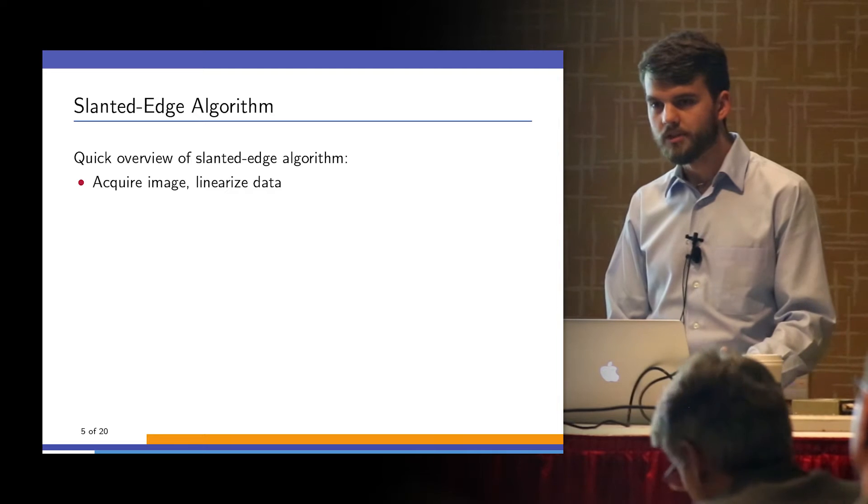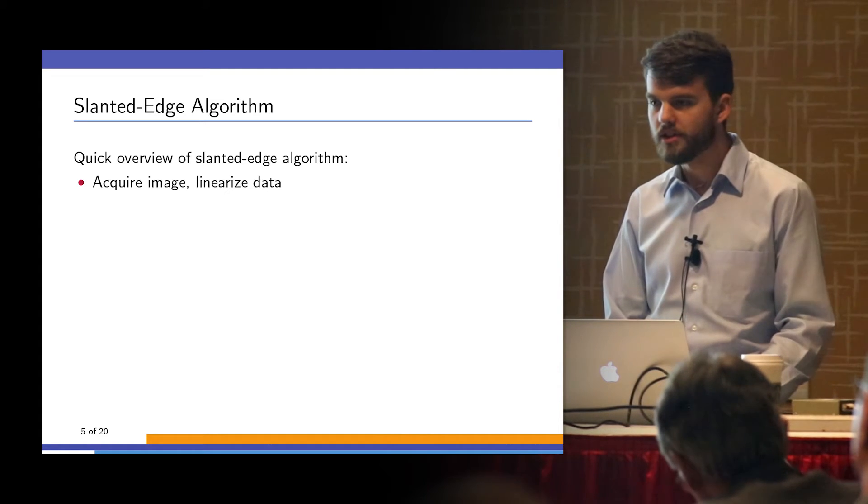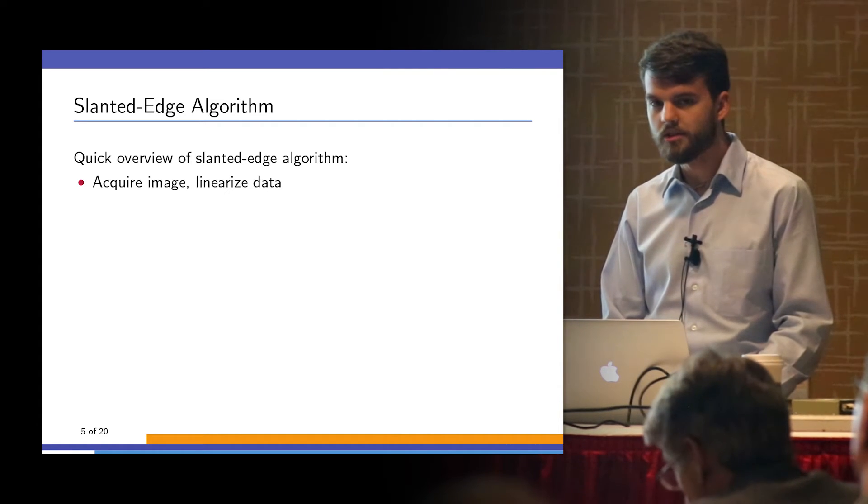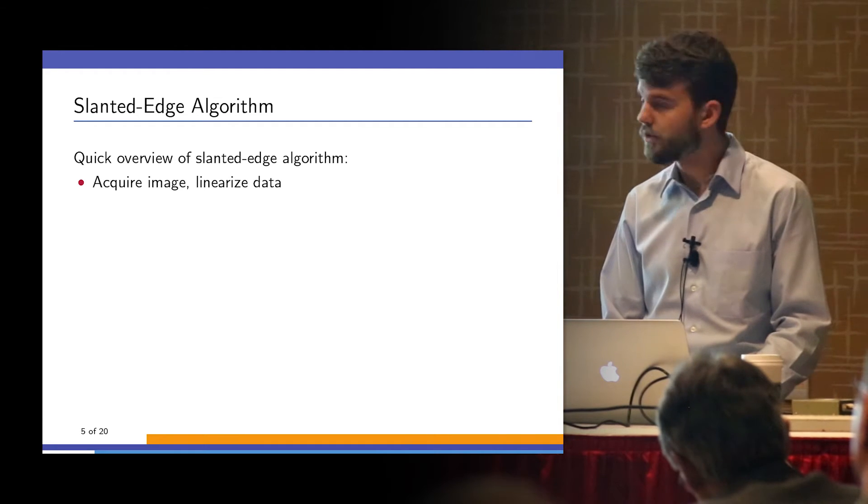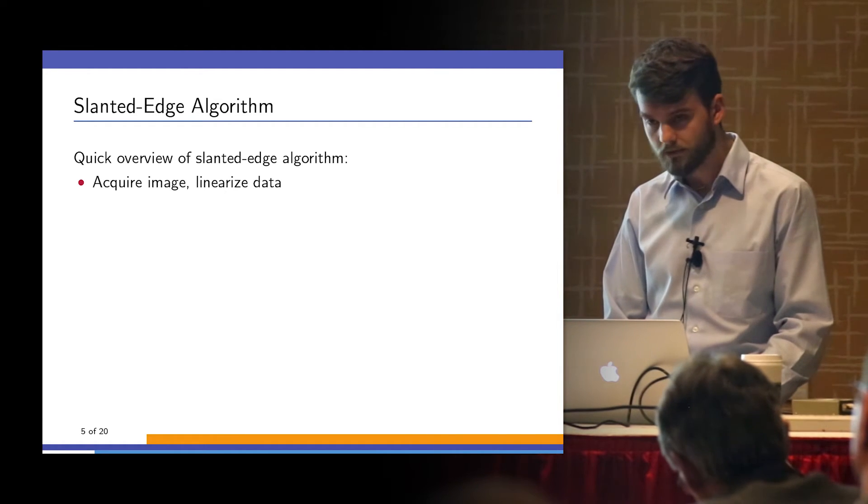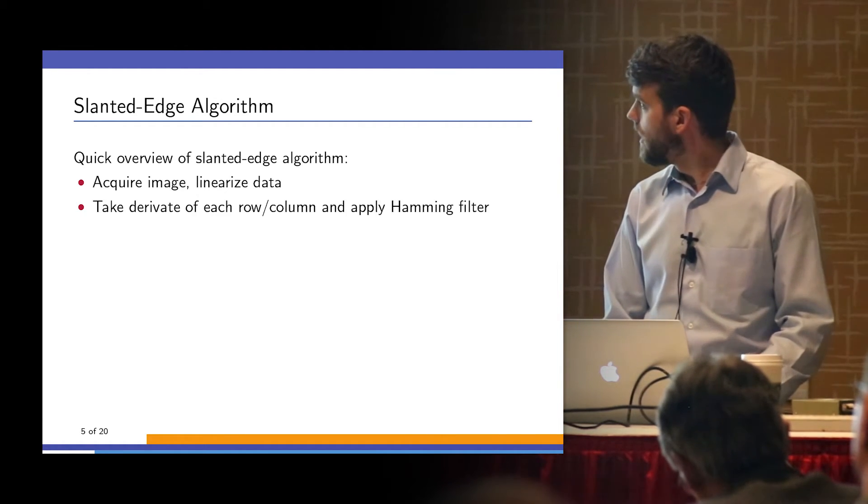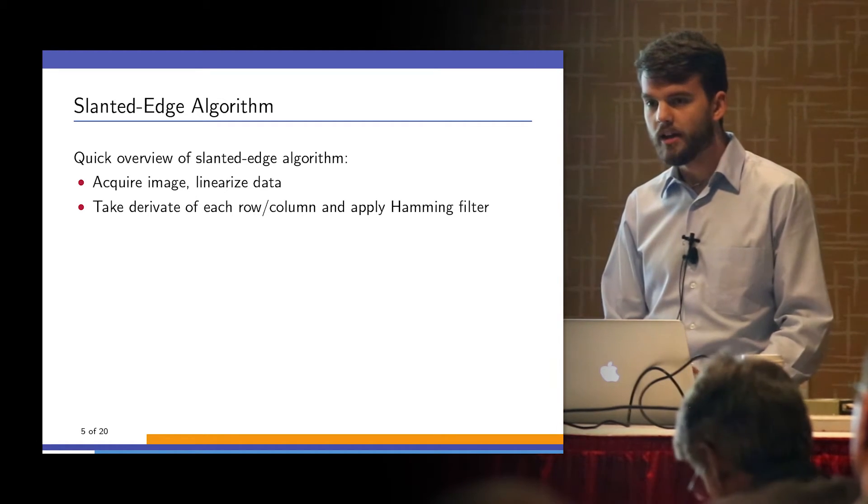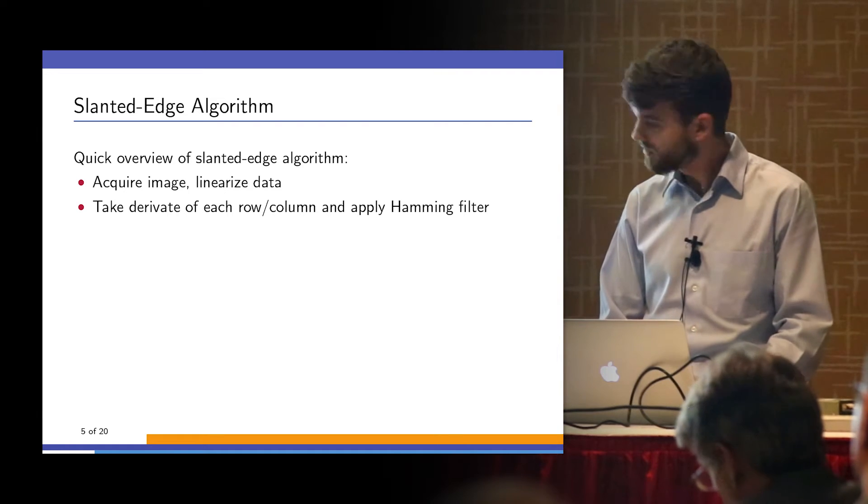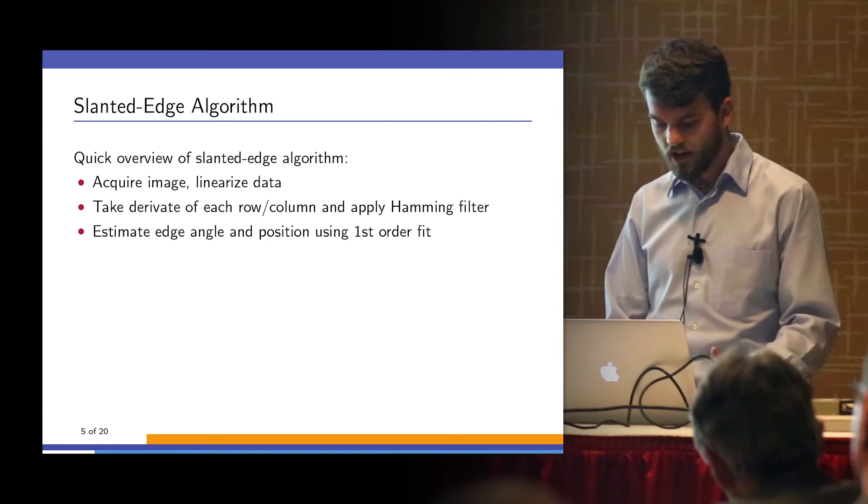First step, acquire an image of a slanted-edge. Make sure that the data is linear, either linearizing it using an OECF target or by using raw data. Take a derivative of each row or column and then apply a Hamming window filter, estimate the edge angle.